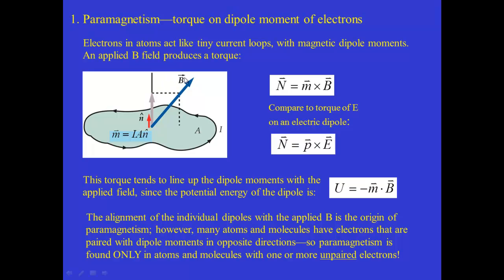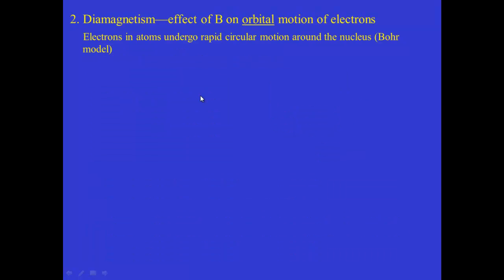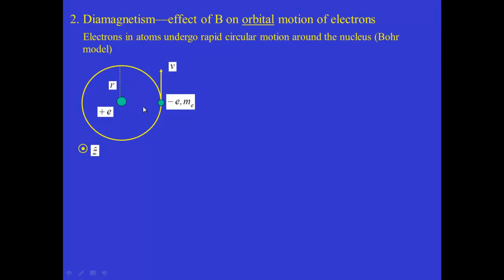We'll do examples and homework asks you to evaluate which atoms or molecules might exhibit paramagnetism. Now diamagnetism arises due to a different effect: the effect of an applied field on the orbital motion of electrons. Rather than just the dipole moment being rotated, in diamagnetism the applied magnetic field causes a change in the orbital motion which results in a change in the magnetic dipole moment itself. To see where this comes from we'll use a semi-classical model — the Bohr model — imagining electrons making circular orbits around the nucleus. For a hydrogen atom, we have an electron with charge -e and mass m_e moving with speed v in a circular path of radius r around the nucleus. The z-axis points out of the page.